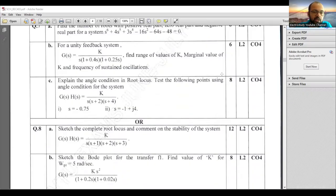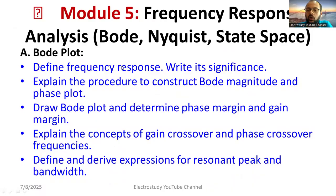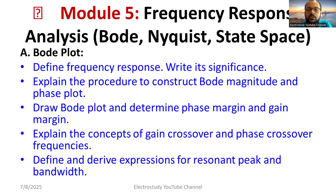Module 5 has three segments: Bode plot, Nyquist plot, and state space analysis. Study the correlation between time domain and frequency domain — a very important question. For frequency domain specifications: bandwidth, resonant frequency. For Bode plot procedure: write the standard form, put s = jω, calculate magnitude and phase, compute slopes, plot magnitude and phase plots, then calculate gain margin and phase margin. Positive gain margin means stable; negative means unstable.